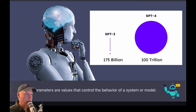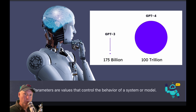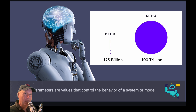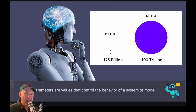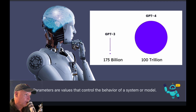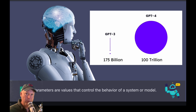ChatGPT-3 — which you probably never heard of when it came out — had 175 billion parameters. Parameters are values that control the behavior of a system or model, so think of them as options. GPT-4, and now they have 4.0 or Omni, has approximately 1.173 trillion parameters. You can see this graphically represented here — how much more powerful GPT-4 is. Imagine GPT-5 and beyond. The growth is just phenomenal.